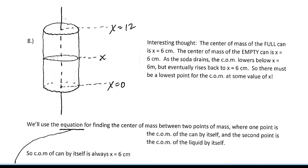Here the soda can is drawn with the soda level at some intermediate level between full and empty. The level at any given time is x. x equals 0 is the bottom of the can, x equals 12 centimeters is the top. When the can is full it's a symmetrical object and the center of mass would be right in the center, halfway up at x equals 6.